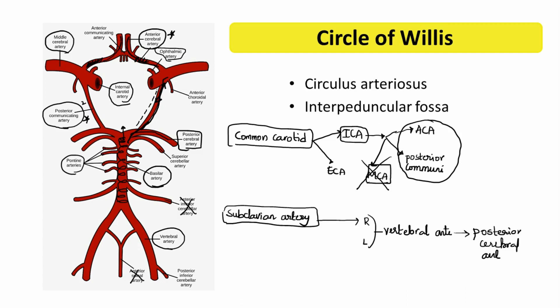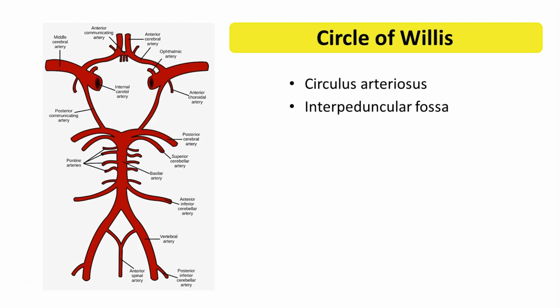The final loop of the anterior cerebral artery is closed by a branch known as the anterior communicating artery. The five major arteries involved in the formation of the circle of Willis are: (1) anterior communicating artery, (2) anterior cerebral artery, (3) posterior communicating artery, (4) posterior cerebral artery, and (5) basilar artery. These five arteries form a circle located in the interpeduncular fossa.